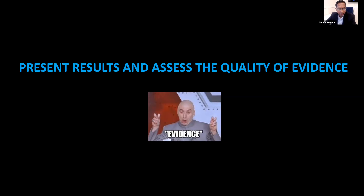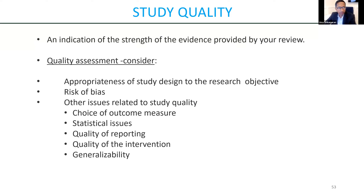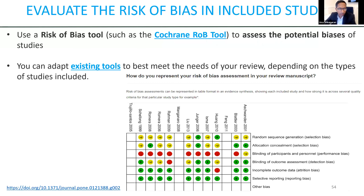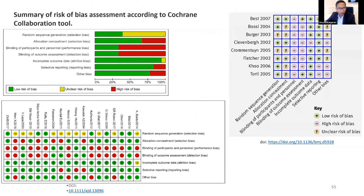In terms of assessing quality, there are tools to evaluate the risk of bias, choice of outcome measures, statistical issues, and quality of reporting. The Cochrane risk of bias tool lets you go through each study looking at things like random sequence generation, allocation concealment, blinding of participants, blinding of outcome assessors, and so on. Each of those categories is assessed for each paper to give you an overall quality assessment for all the papers you'll include in your review.